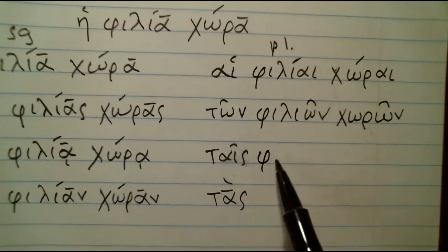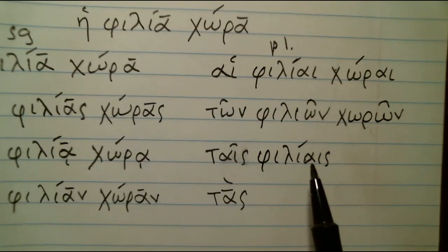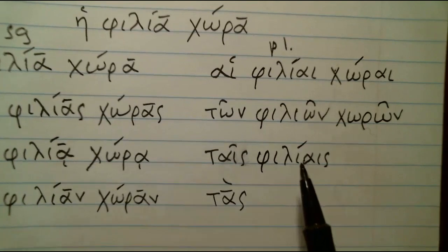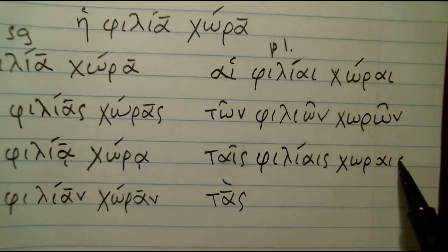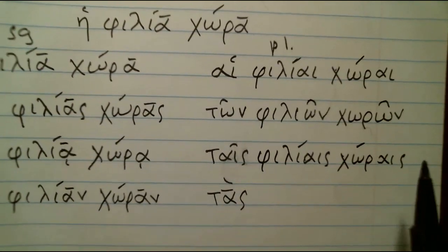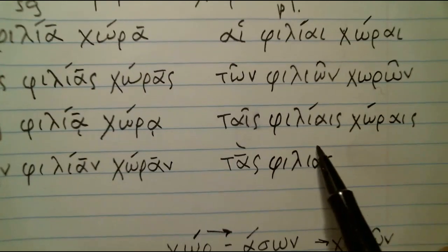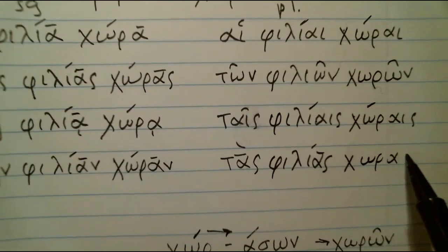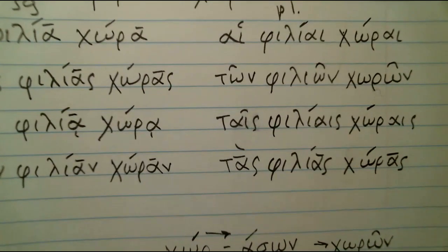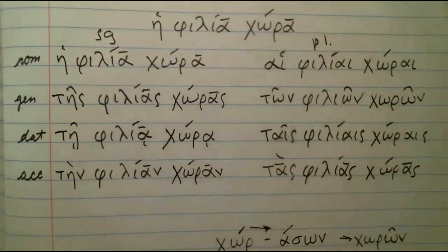So we have thais, philiais. Sigma on the end prevents that from being short like it was — it's long, but it doesn't change the accent at all. And then we have chorais. And then the accusative: thais, philias — long alpha — and chorais. So that is he philia chora, the friendly country, declined for you. That was the one thing that was kind of weird — I wanted to point that out to you.